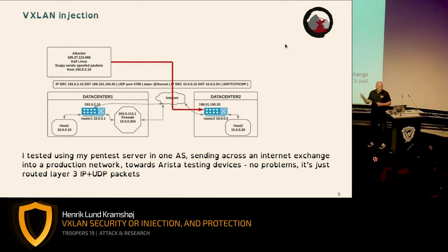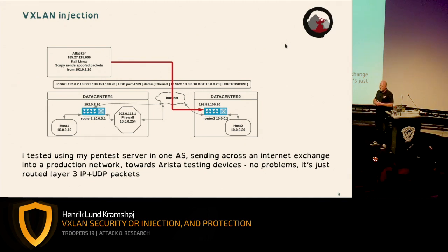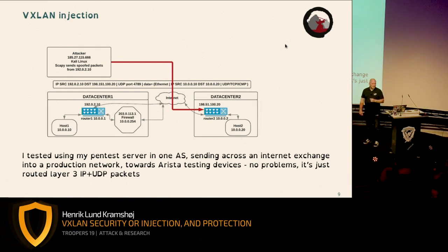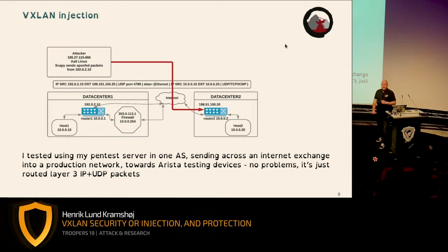I tested this first in a small lab, then moved to a pen-test server in another network. The attacks described have been tested from a pen-test server in one AS network, across an internet exchange, into a big network, and then into an insecure VXLAN environment. There's no reason this shouldn't work across countries on the internet — VXLAN is just IP/UDP packets. The only non-standard part is the UDP data field, which contains Ethernet frames.